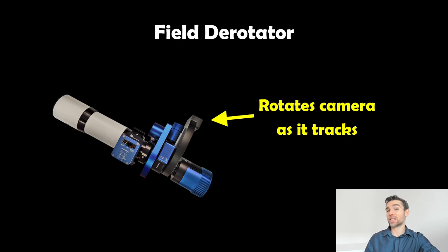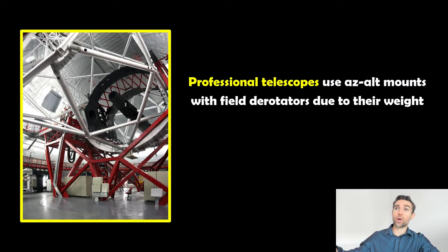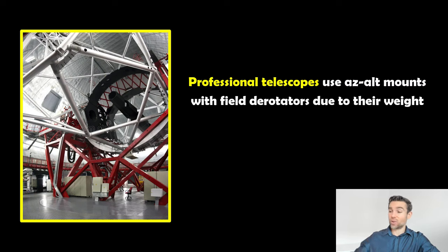It doesn't make much sense to use a field rotator if you've got your own small telescope — you just get an equatorial mount and align it. But the bigger professional telescopes are simply too big for an equatorial mount. When they get to a certain size and you align to the polar axis, the telescope has to lean to one side with a lot of weight, so engineering-wise it's not practical. Instead, they use an altitude-azimuth mount moving in two axes, and they use a field derotator to compensate for the field rotation. Even the big professional telescopes don't use equatorial mounts because they're just too large.